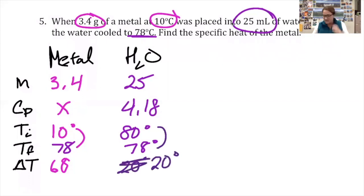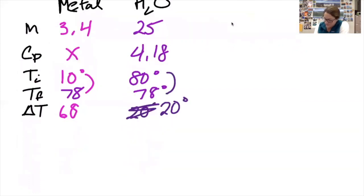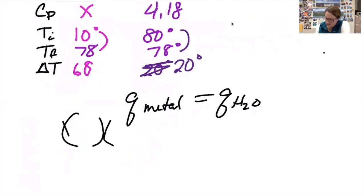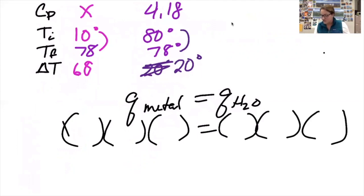And now I'm ready to plug into my heat loss heat gained. So the energy gained by the metal is equal to the energy lost by the water. So I'm going to multiply the mass, the specific heat, and the change in temperature, and set it equal to the mass, the specific heat, and the change in temperature.